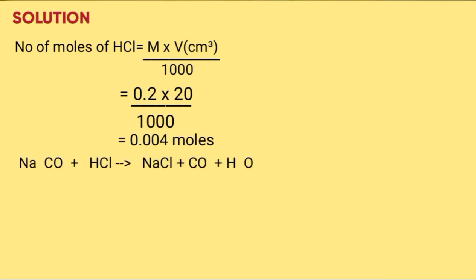The equation for the reaction is sodium carbonate plus hydrochloric acid gives sodium chloride plus water plus CO₂. To balance the equation, place 2 in front of HCl and then place 2 in front of sodium chloride.